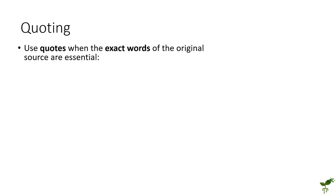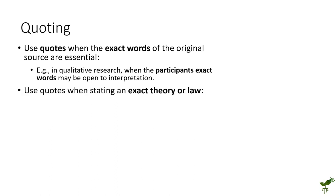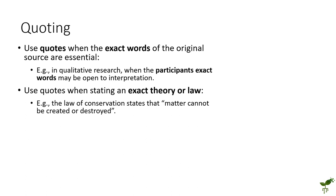Quoting is often done to capture the exact words of the original source. This may be because the exact words are essential — for example, when doing qualitative research, participant words in psychology research are really important. They might capture important opinions or things which may be lost if we weren't directly quoting. You might also want to directly quote in subjects like English when asked to refer to a particular section of the text. Quoting might also be important when stating the exact words of a theory or law — for example, the law of conservation of matter, which has specific wording that can only be written so many different ways.